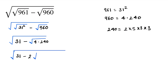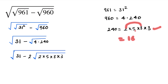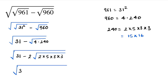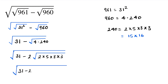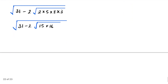So we put the value: 31 minus 2 into under root of 2 into 5 into 8 into 3. Now we multiply: 8 into 2 equals 16, and 5 into 3 equals 15. So we now have 31 minus 2 into under root of 15 into 16.